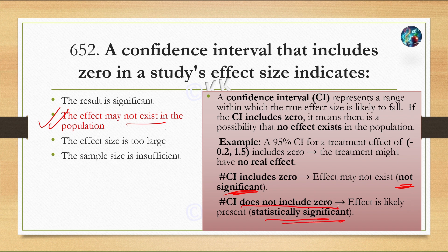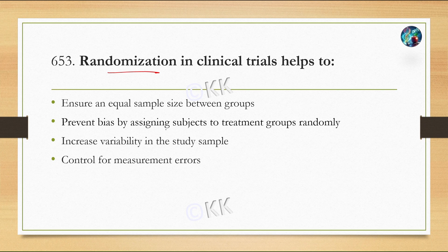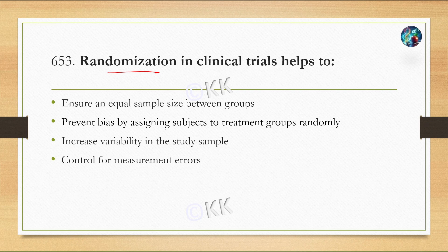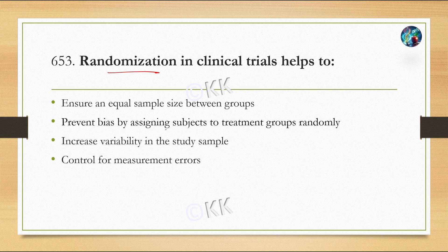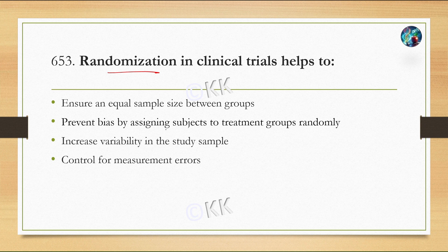Next question: Randomization in clinical trials helps to: Option A, ensure equal sample size between groups; Option B, prevent bias by assigning subjects to treatment groups randomly; Option C, increase variability in the study sample; Option D, control for measurement errors. The correct option is Option B, prevent bias by assigning subjects to treatment groups randomly.